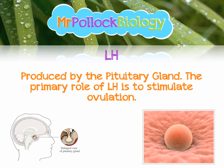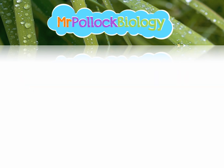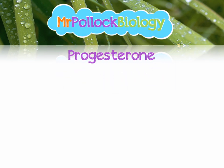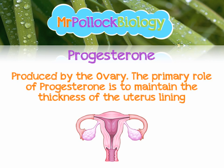Moving down to the ovaries, there are two hormones produced here. The first is oestrogen — the American spelling estrogen is now widely accepted too. Its primary role is to thicken the lining of the uterus, or endometrium, so that a fertilized egg, once developed into an embryo, can implant into that soft endometrium and develop. The next hormone is progesterone, also produced in the ovaries — specifically by the corpus luteum, which is the empty follicle after ovulation. Its primary role is to maintain the thickness of the endometrium so that pregnancy can occur successfully.